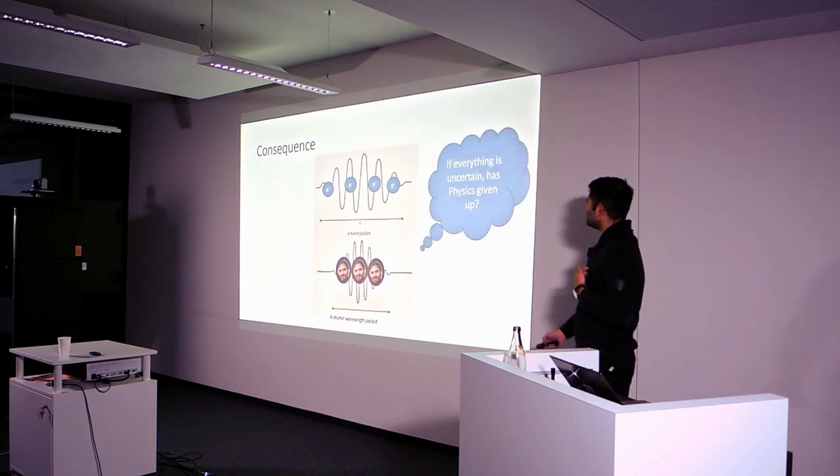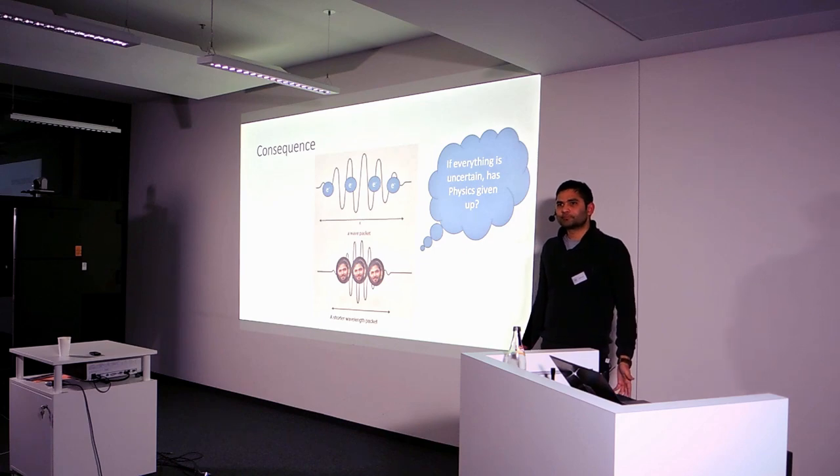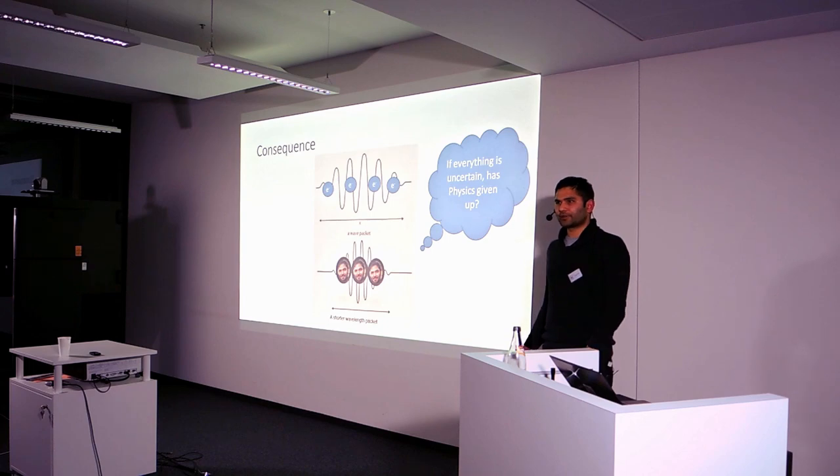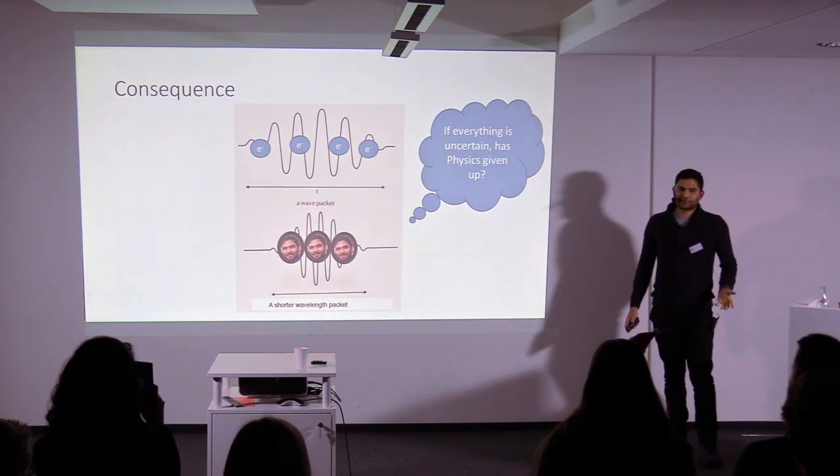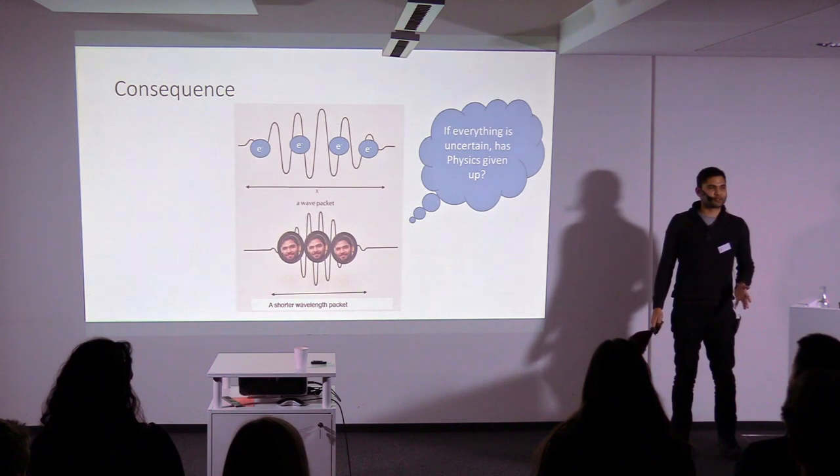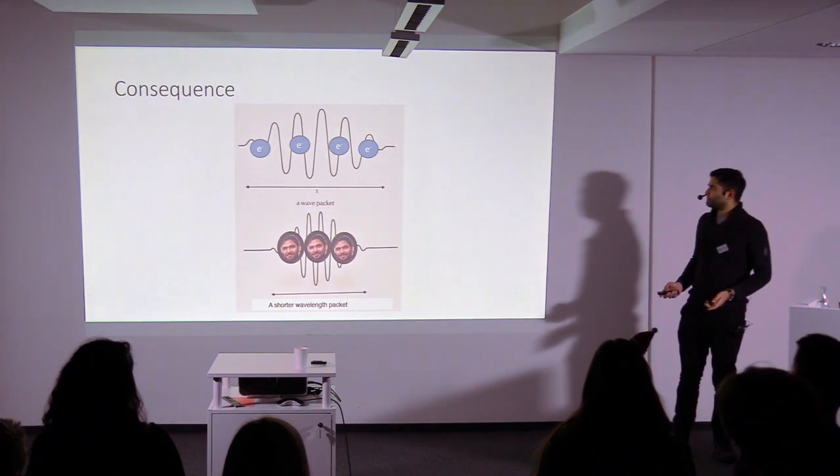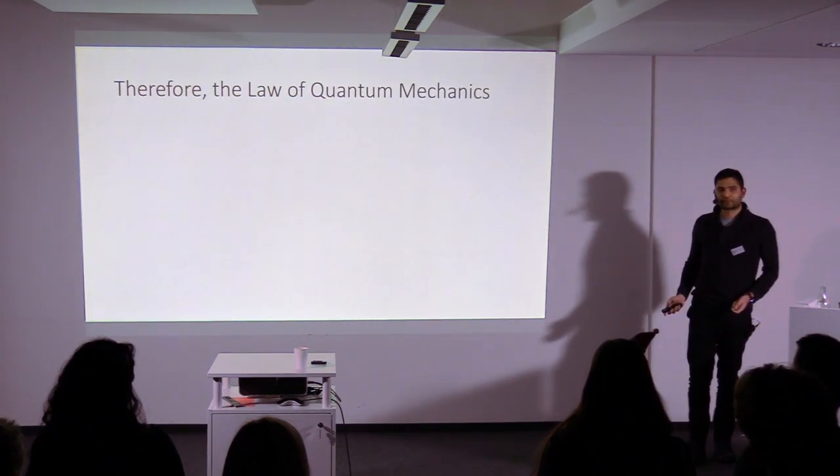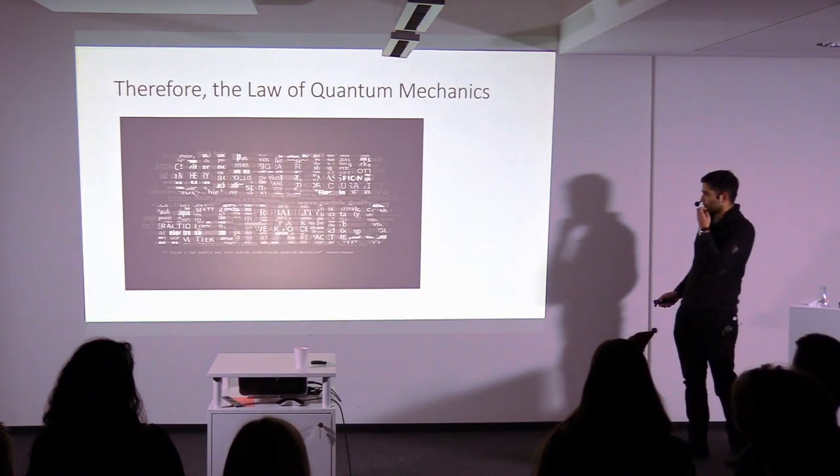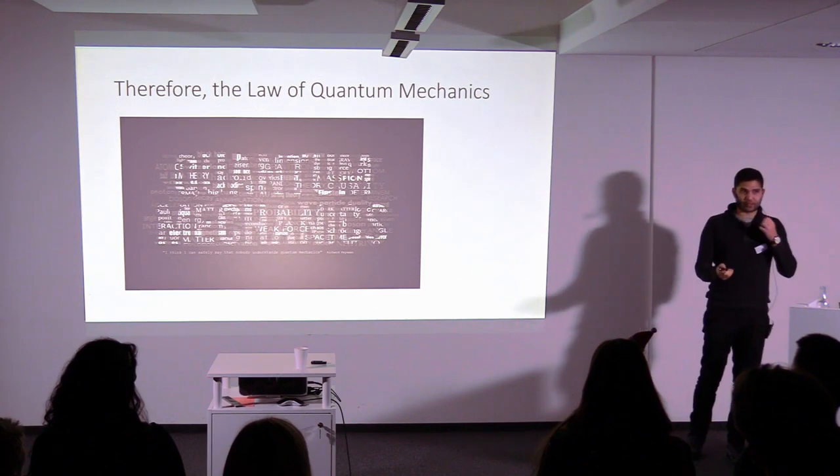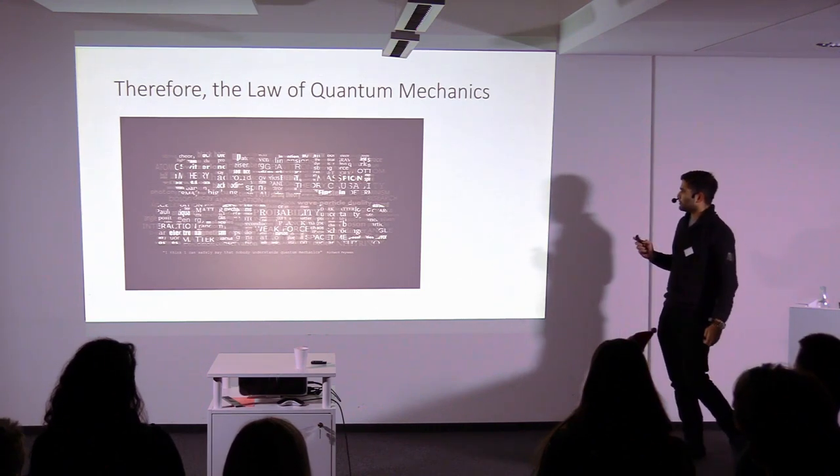So has physics given up? Everything by far we've done so far is deterministic. Whatever we have seen, we see objects, we feel objects, we know where they are in space. Now things are suddenly probabilistic, and the time you see it, it behaves something completely different. So, it has given up in a sense. At least the deterministic part has given up. And we now come to the probability world, where nothing is really certain. And therefore, the law of quantum mechanics. And Richard Feynman, as he said, I think I can safely say that nobody understands quantum mechanics. Probably including me. There is, again, a sense of probability there.